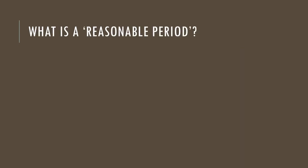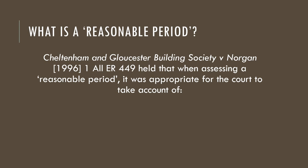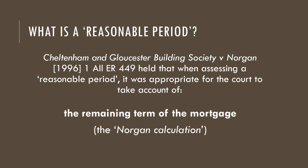So what do we mean by that reasonable period within Section 36? Well, the case of Cheltenham and Gloucester Building Society v. Norgan held that when assessing a reasonable period, it was appropriate for the court to take account of the remaining term of the mortgage — what we might call the Norgan calculation. A doctrinal lawyer, anyone looking at that judgment, would likely assume that, given the typical length of most first mortgages is 25 years, in the majority of cases that would give the occupier many years — decades possibly — to pay their arrears and their normal contractual payments. That's what Section 36 requires: any sums due relates to the arrears, the missed payments, plus their normal contractual payments.